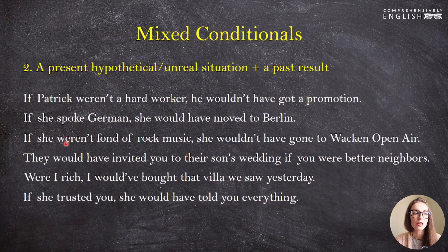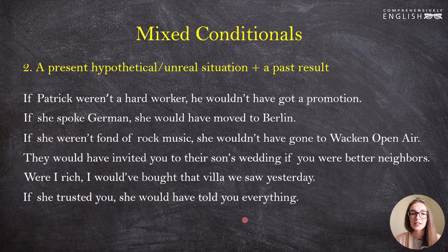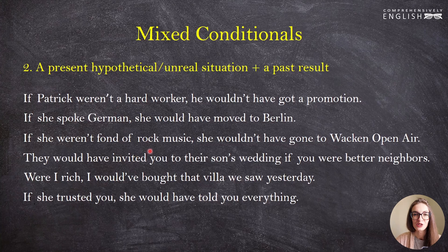'If she weren't fond of rock music, she wouldn't have gone to Wacken Open Air.' The fact is she is fond of rock music and that's why she did go. Again, 'she weren't' — the subjunctive 'were' is used. 'They would have invited you to their son's wedding if you were better neighbors.' 'Were I rich, I would have bought that villa we saw yesterday' — but I'm not rich and that's why I didn't buy it. These sentences help us speak about results we could have had in the past if our general reality were different.